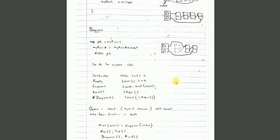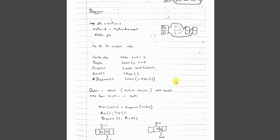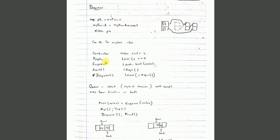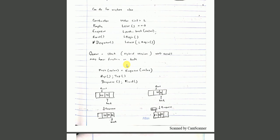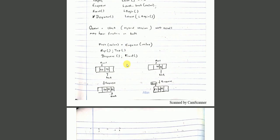For dequeue, we use a temporary pointer variable. Set it to front, then update front to front's next. Delete the temporary pointer. This removes the front element. We can also use vectors as a hybrid implementation between linked and array-based queues.